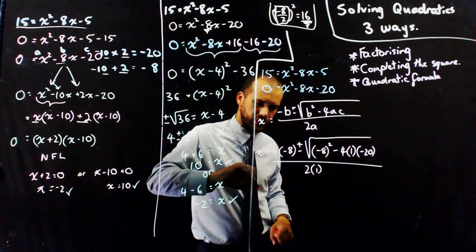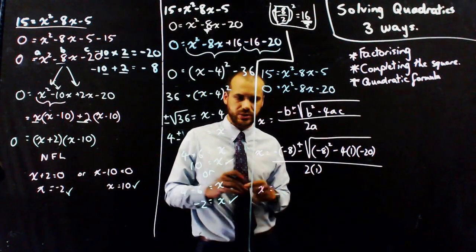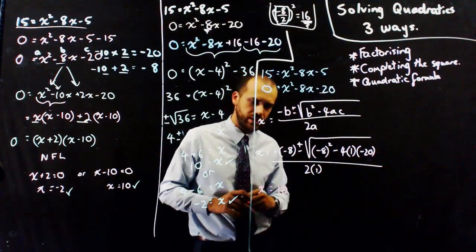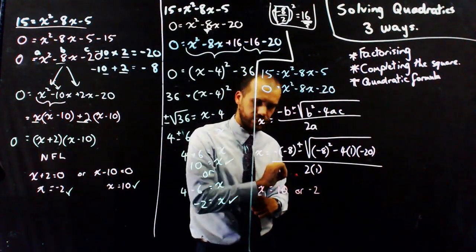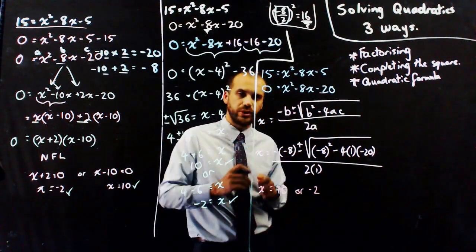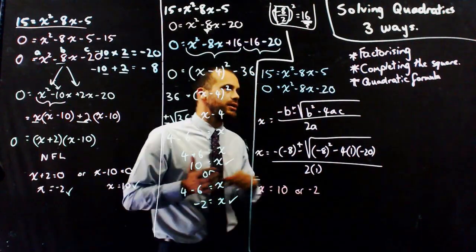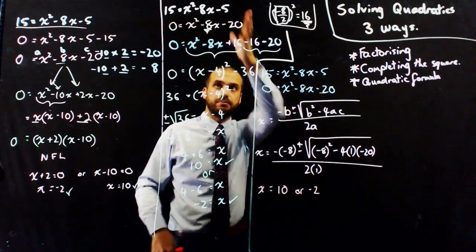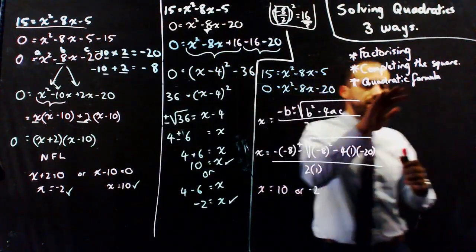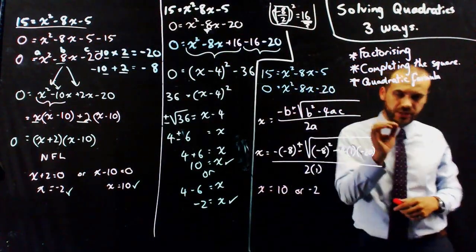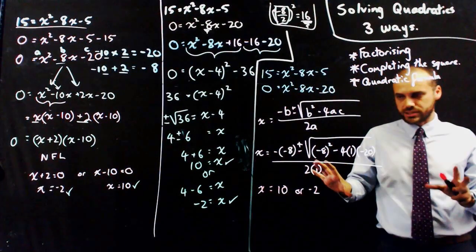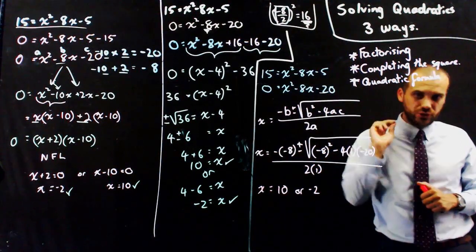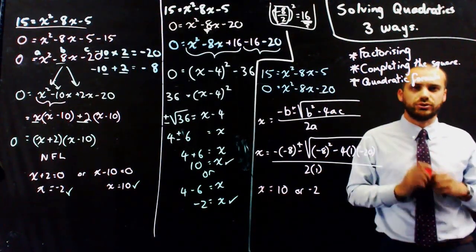When you type that into your calculator, I am very confident your two answers will be x is equal to 10 — probably when you put in the plus sign — and x is equal to negative 2 — probably when you put in the negative sign. There is factorising, completing the square, and the quadratic formula — three ways to solve. They all have their pluses and their minuses. You can talk to me about them in class, but they are things that you have done before and you should be able to do.